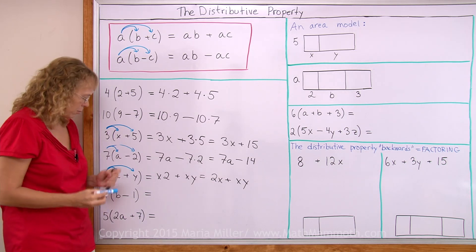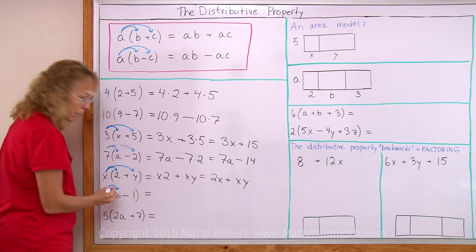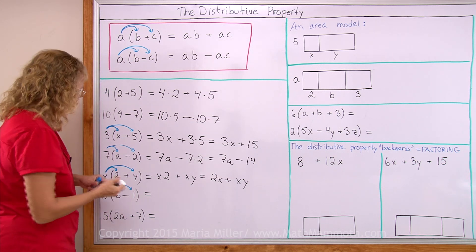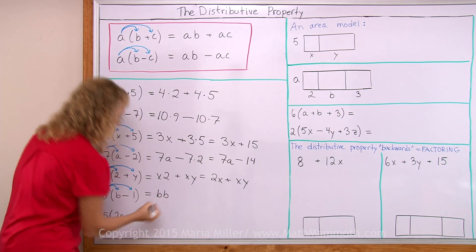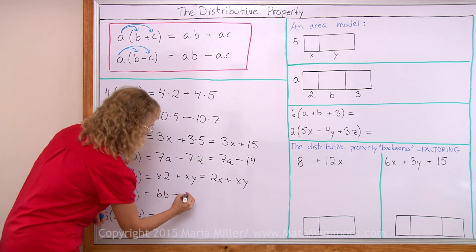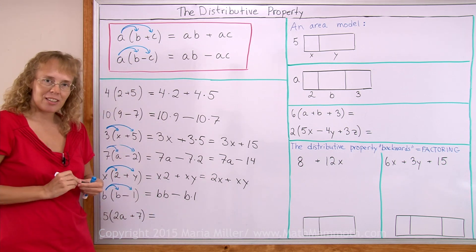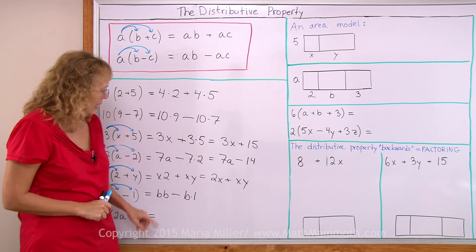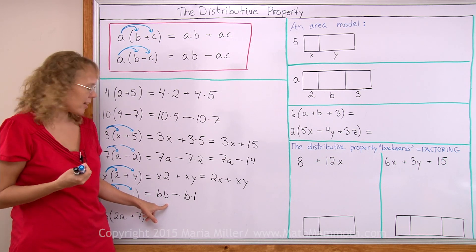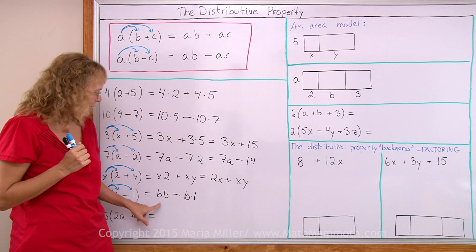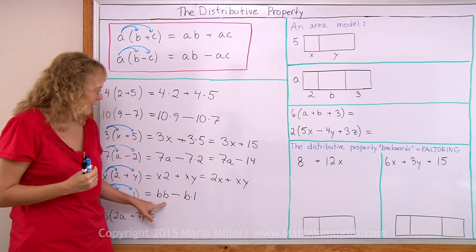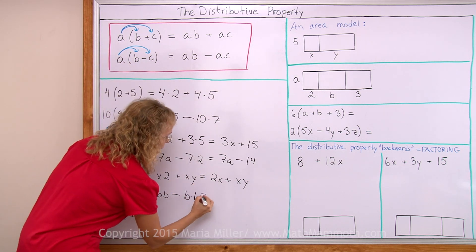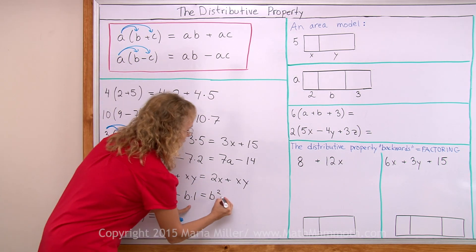Over here, let's do this one. b times b and then minus b times 1. So we get b times b, and minus b times 1. Here we can simplify again a little bit. First of all b times 1 happens to be just b. And then b times b, there is a shorthand way of writing that. You have here repeated multiplication by the same number, so we can write that with the exponent 2. We can write it as b squared, and then this one is just b.